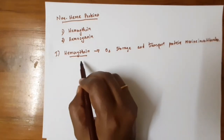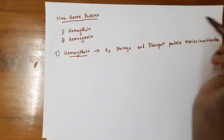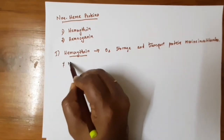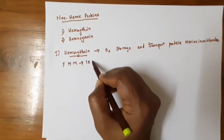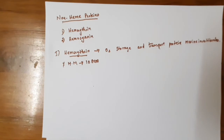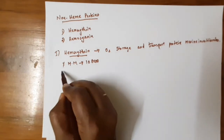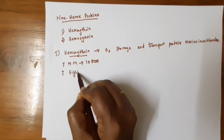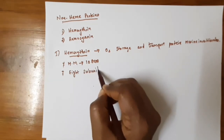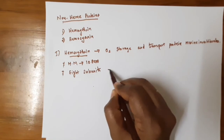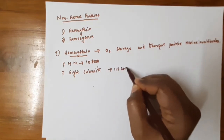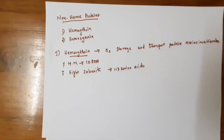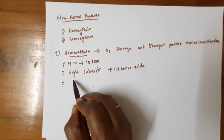Hemerythrin is found in marine invertebrates, used to store and transport oxygen. Its molecular weight is approximately 108,000 — similar to hemoglobin. Like hemoglobin, hemerythrin contains subunits; it has nearly 8 subunits in its protein structure, each subunit consisting of 130 amino acids.